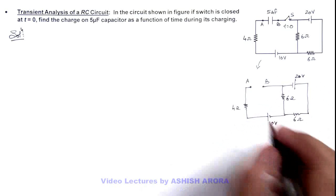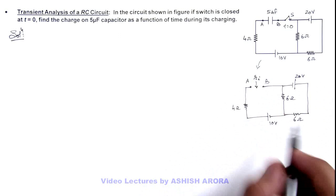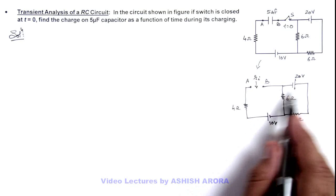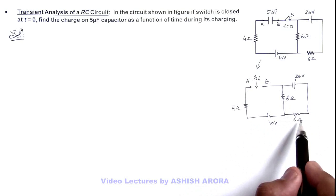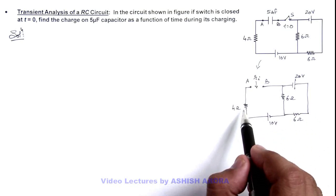Now if we wish to calculate the internal resistance of this circuit, the internal resistance can be calculated by replacing the batteries by a short circuit. So here, 6 ohm in parallel with another 6 ohm, that will be 3 ohm in series with this 4 ohm resistance.